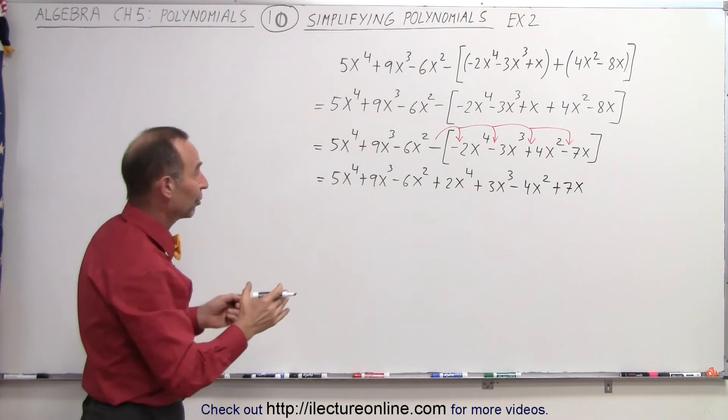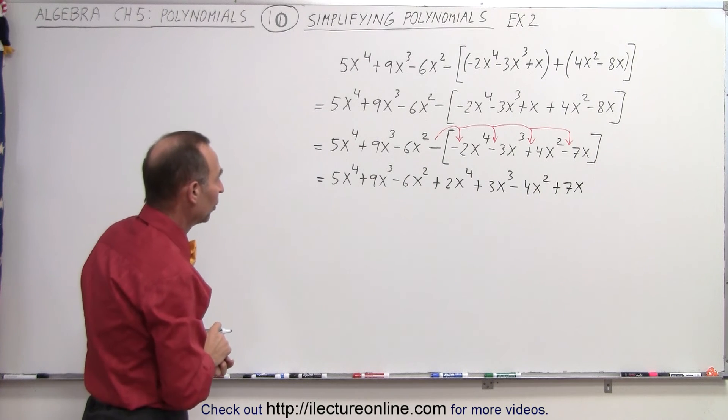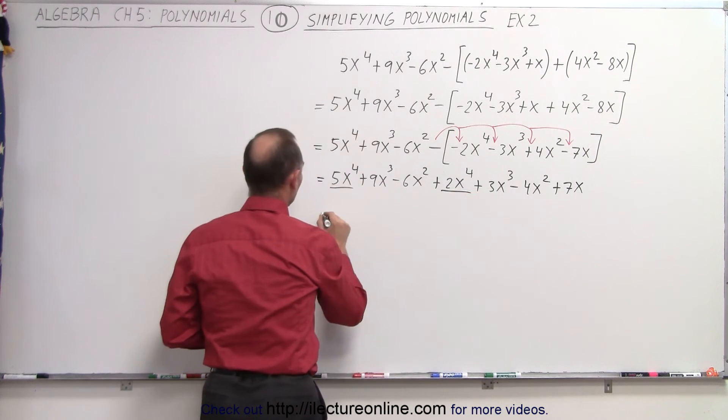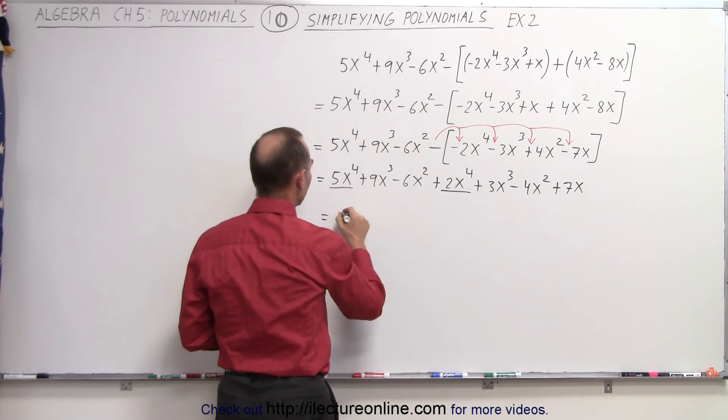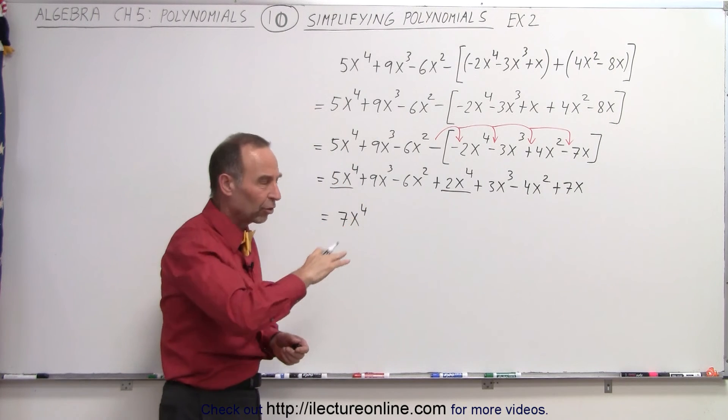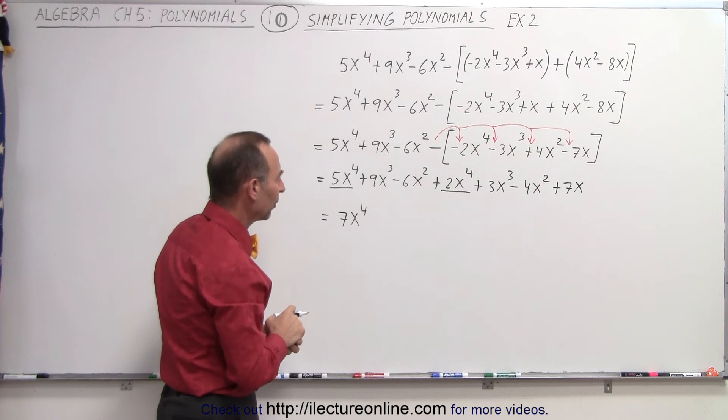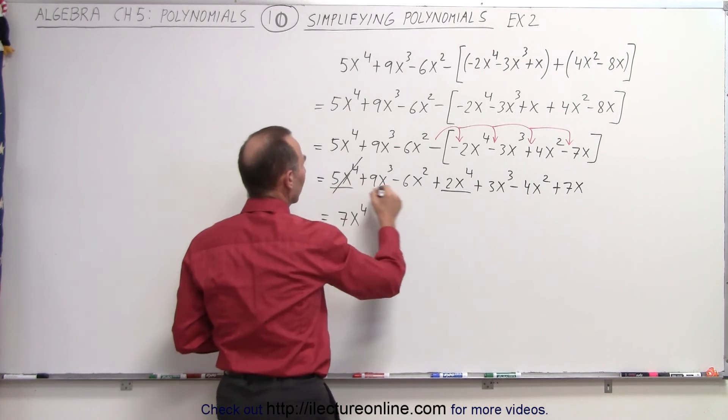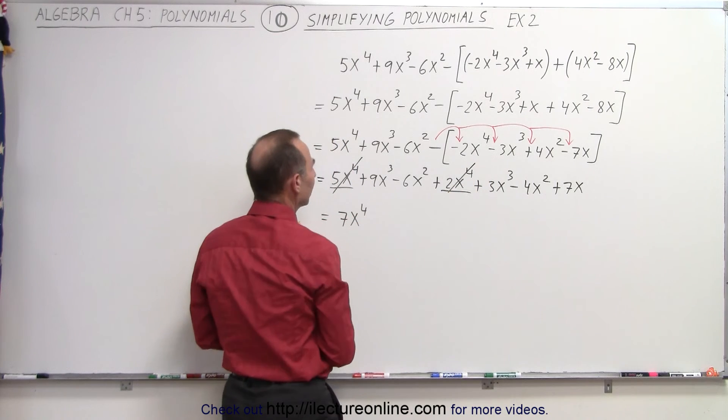Now we simply have to add like terms. Starting with an x to the 4th term, we have two of those. So we're going to combine those two. 5 plus 2, which is 7x to the 4th. Sometimes it helps to cross the terms that you already summed up because that way it makes it easier to keep track of the rest. So we can just go ahead and do that because we've combined them.